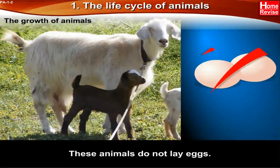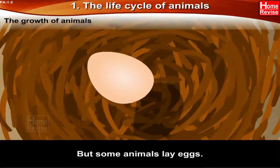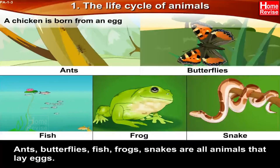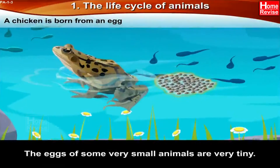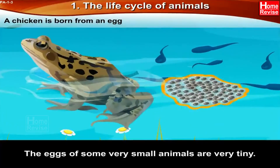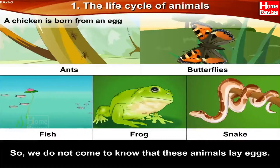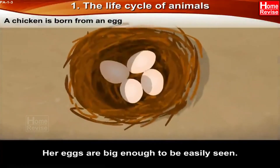These animals do not lay eggs, but some animals do lay eggs. A chicken is born from an egg. Ants, butterflies, fish, frogs, and snakes are all animals that lay eggs. But we do not often see their eggs. That's because the eggs of some very small animals are tiny — we would hardly notice them. But we know for sure that a hen lays eggs; her eggs are big enough to be easily seen.